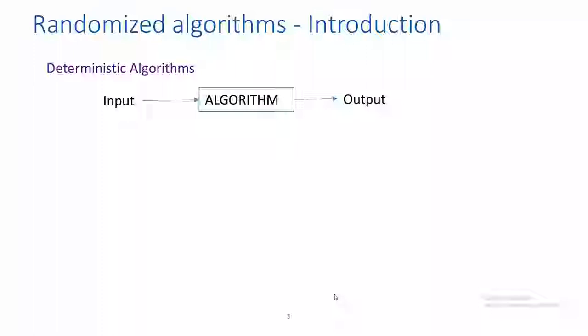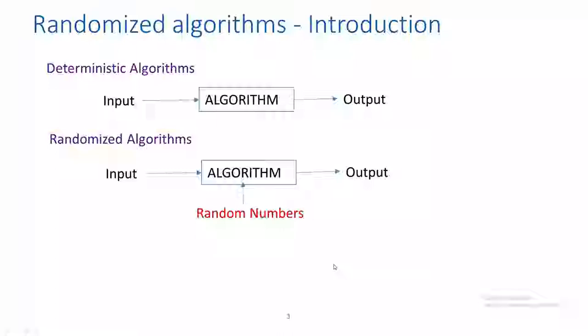But see what happens with randomized algorithms. Along with the input data, you give a stream of random numbers as additional input. So the behavior of the algorithm is controlled by the random numbers, not by the input. It produces some output. Now, if I run a randomized algorithm 20 times with the same input, what about the output? It need not be the same.